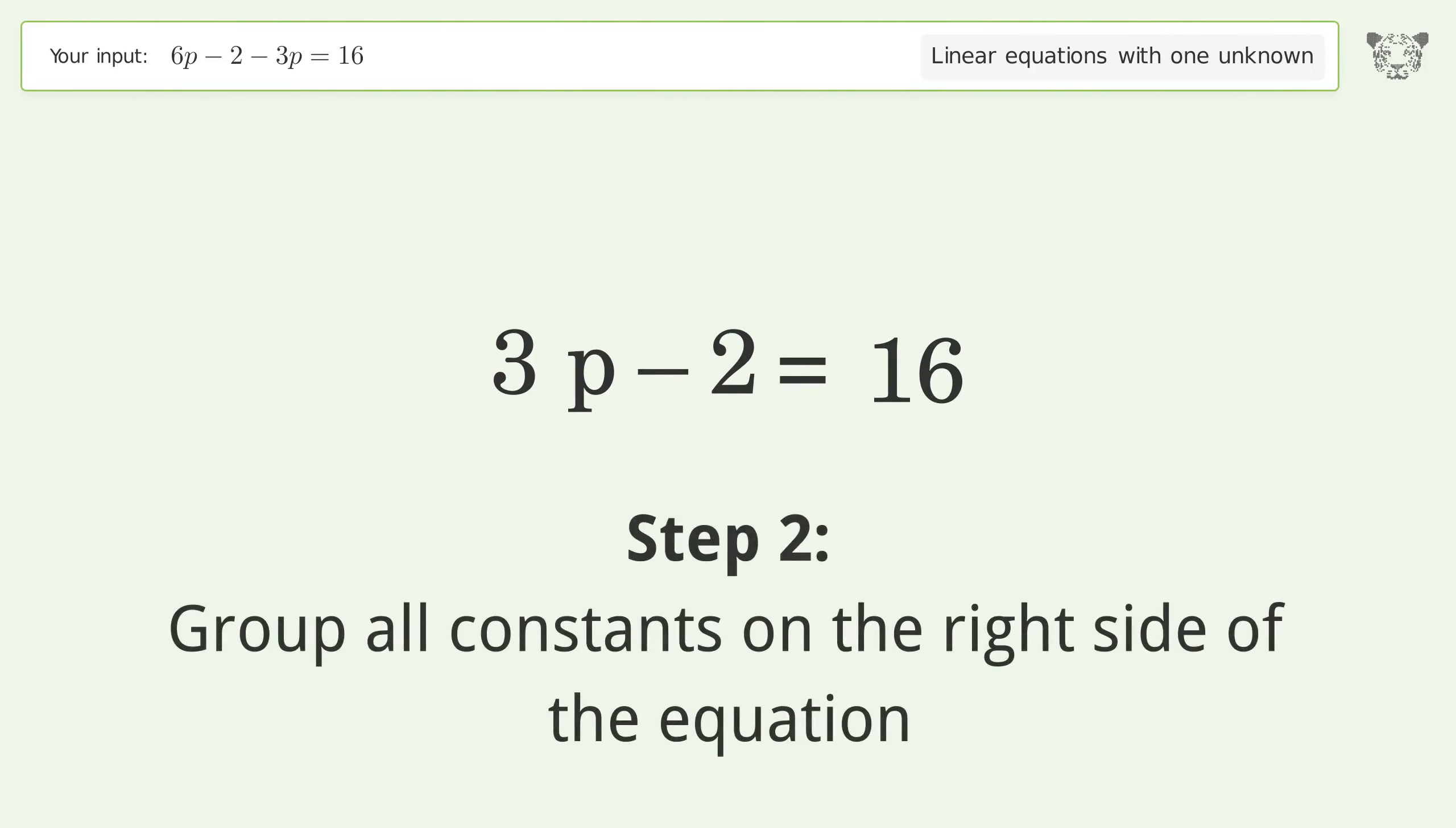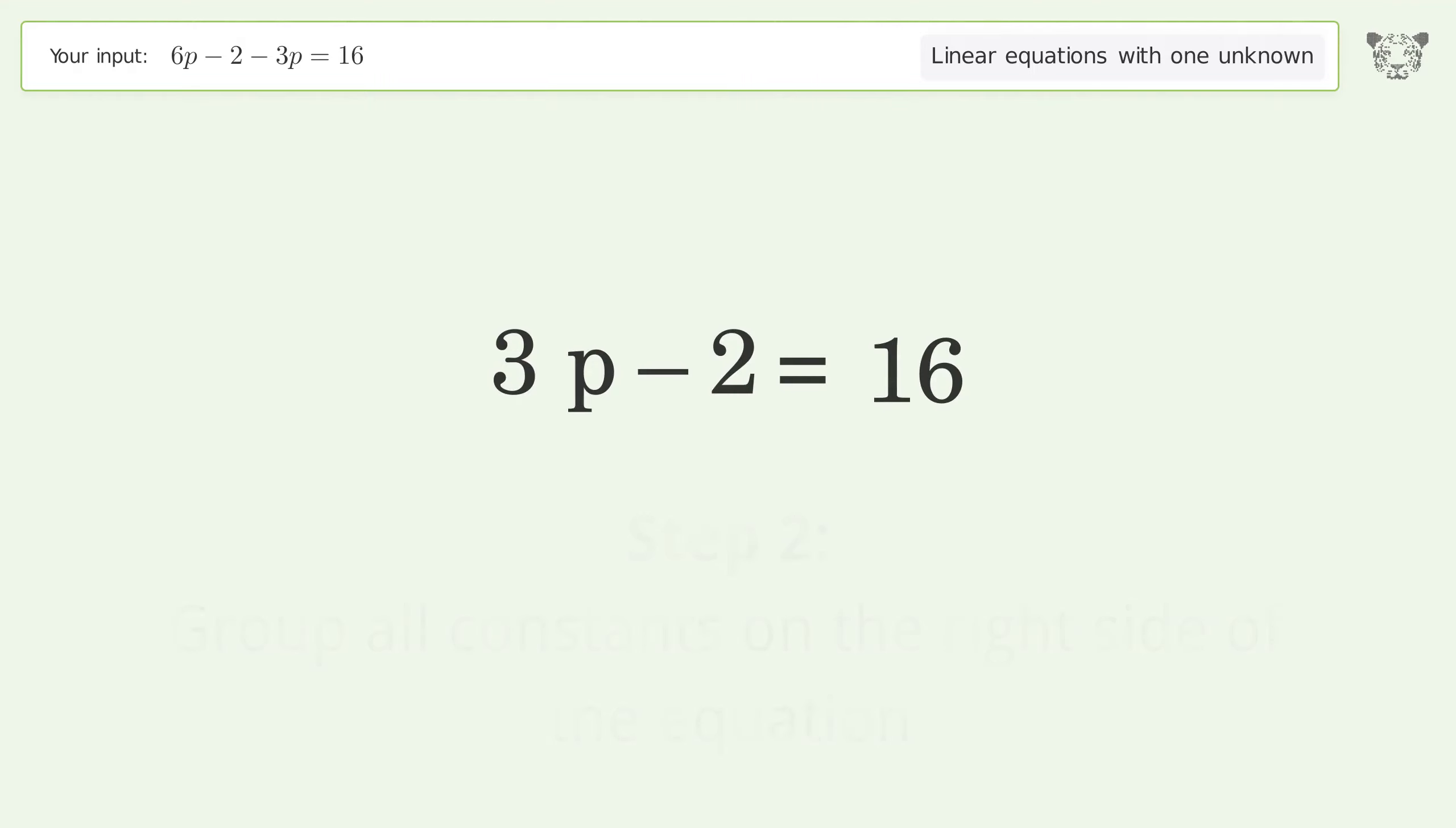Group all constants on the right side of the equation. Add 2 to both sides. Simplify the arithmetic.